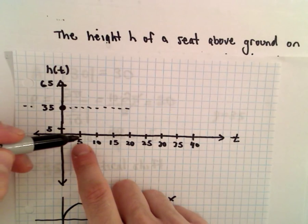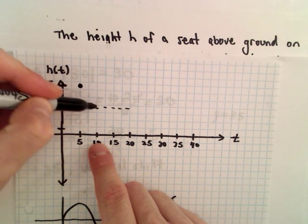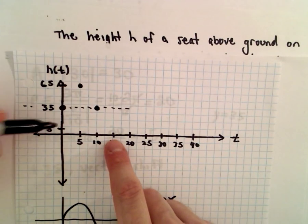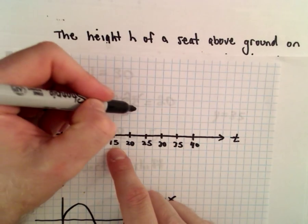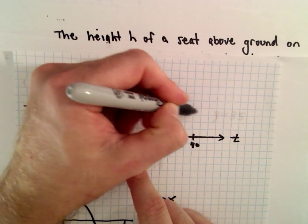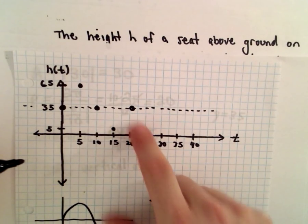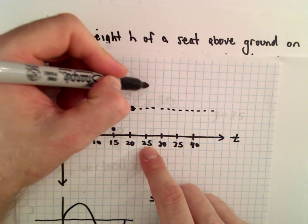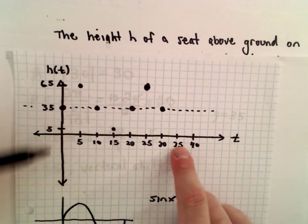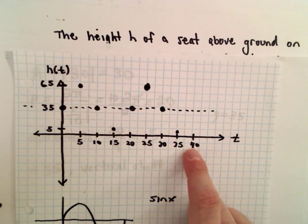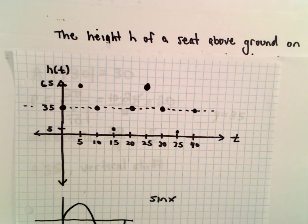At t = 5 we're up at 65; at t = 10 we're back down at 35; at t = 15 we're at the low point of 5. Then it keeps up that pattern: at t = 20 you're back in the middle, at t = 25 you're at the high point, at t = 30 you're back at the middle, at t = 35 you're at the low point, and at t = 40 we're back in the middle. That's two full periods.